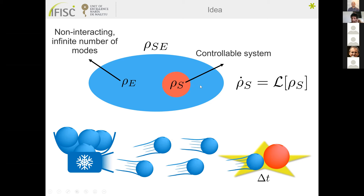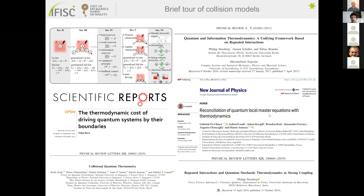In a collision model, you are really describing the elementary interaction between the environment and the system during a single time step Δt — the single collision time. You are really getting to the fine-grain description of what is going on between the system and the environment. Following this approach, you can describe the elementary exchange of entropy, information, and energy — so you can calculate heat, work, and so on.